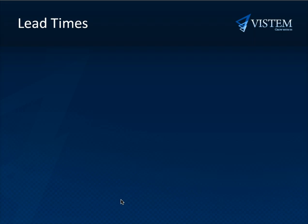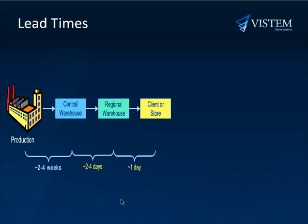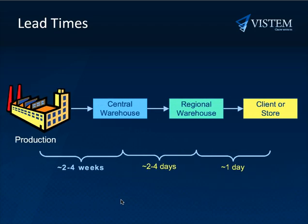Customers, distributors — in fact all nodes of a supply chain — try to hold enough stock because suppliers are unreliable, forecasts are lousy, and lead times too long. You cannot blame the managers; they are simply responding to their daily experience.